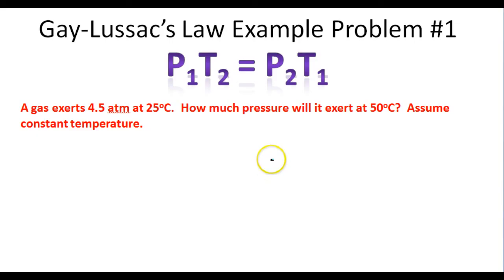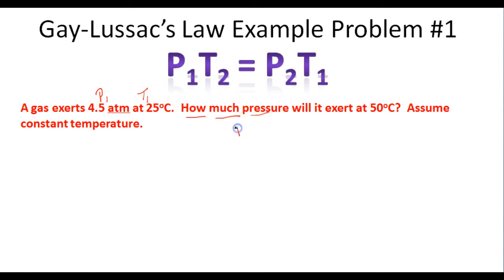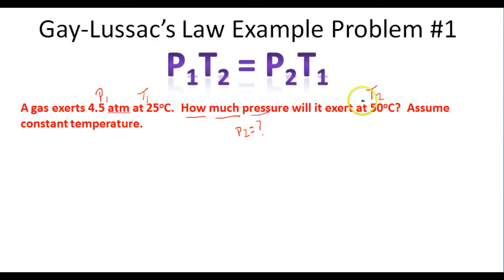In this problem, a gas exerts 4.5 atmospheres at 25 degrees Celsius. How much pressure will it exert at 50 degrees Celsius? We're going to assume constant volume and mass. P1 is 4.5 atmospheres and T1 is 25 degrees Celsius. We're asked to find P2 after the temperature increases to 50 degrees Celsius. Before plugging in numbers, we need to convert the Celsius temperatures to Kelvin by adding 273.